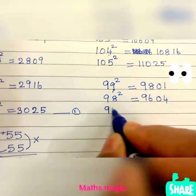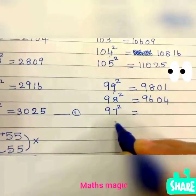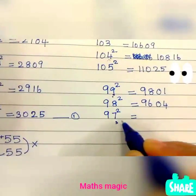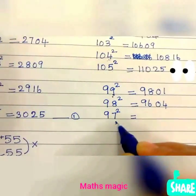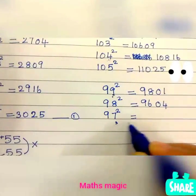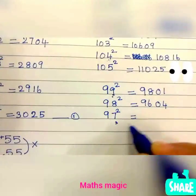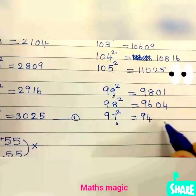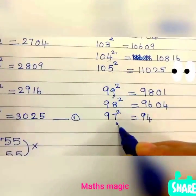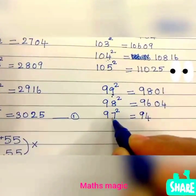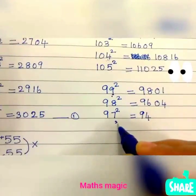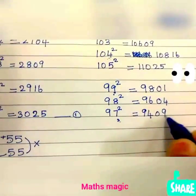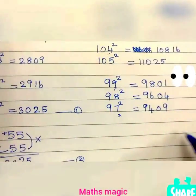For 97 squared: 100 minus 3 is 97. Double 3 is 6, so 100 minus 6 is 94. We subtracted 3 from 100, so square of 3 is 9, written as 2 digits: 09. So 97 squared is 9409.